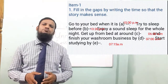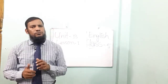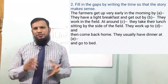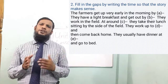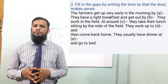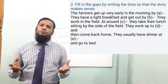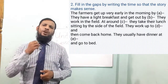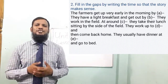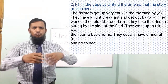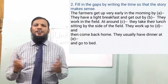I think this sequence makes good sense. Let's go to practice another gap-filling activity. The farmer gets up very early in the morning by [blank]. They have a light breakfast and get out by [blank]. They work in the field. At around [blank] they take their lunch sitting by the side of the field. They work up to [blank], then come back home. They usually have dinner at [blank] and go to bed.